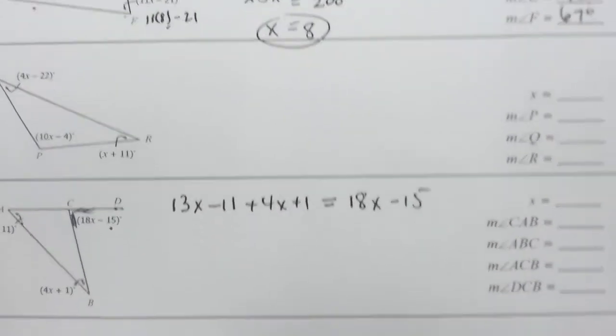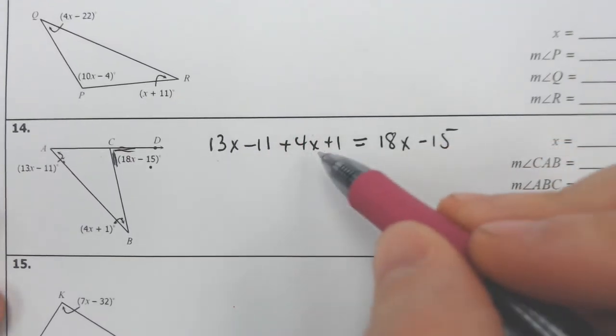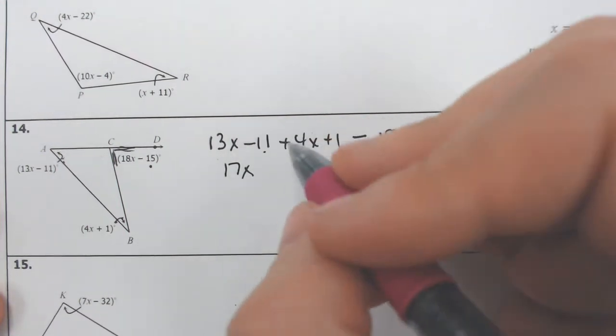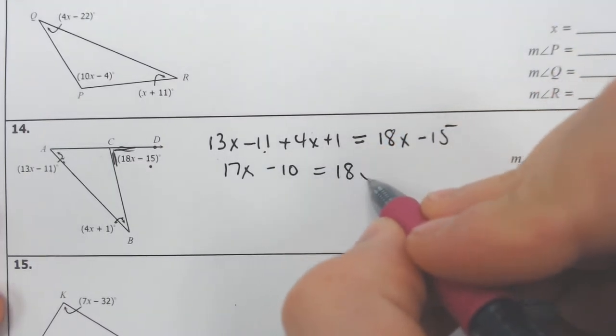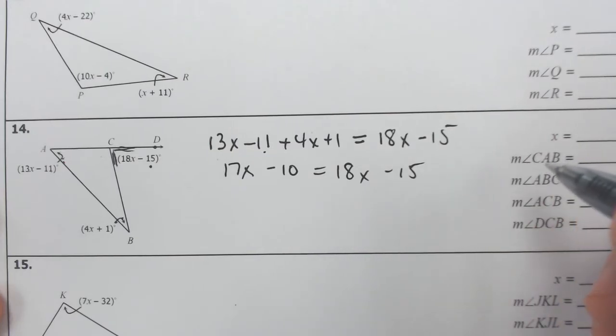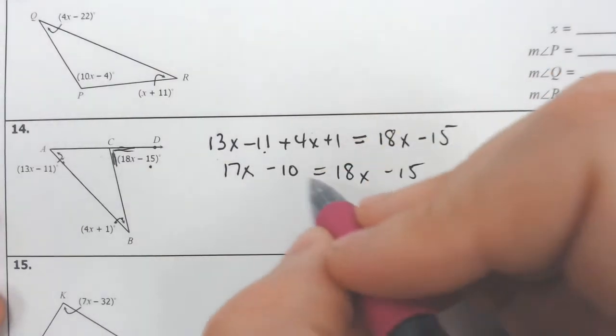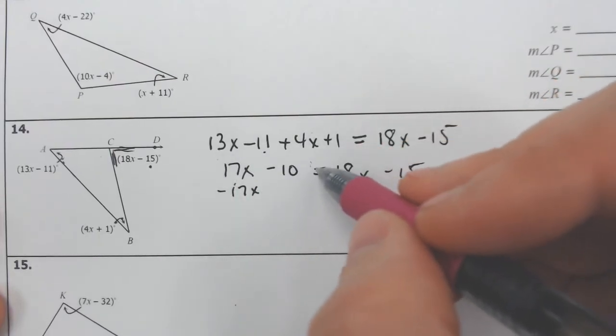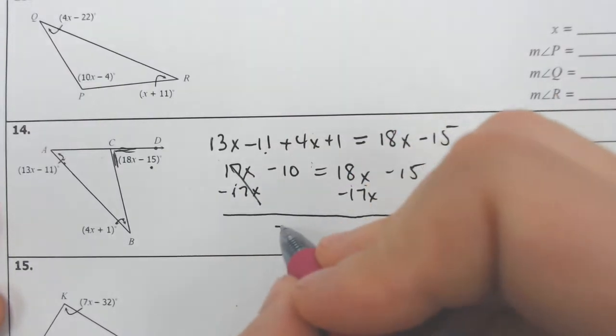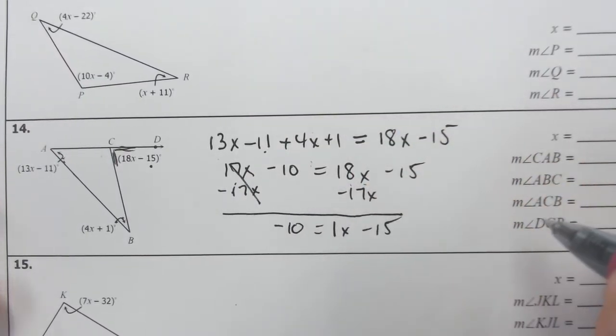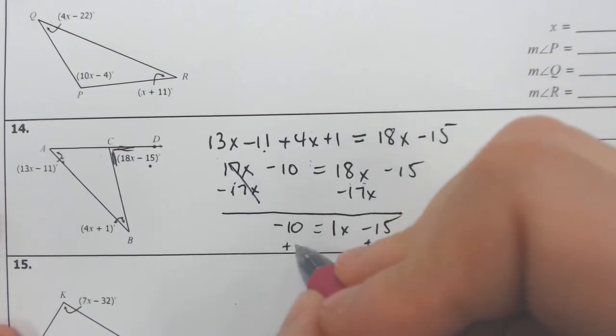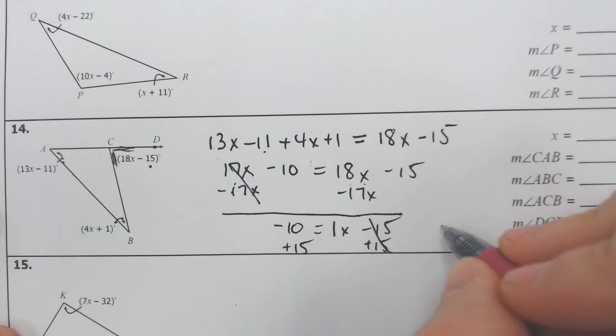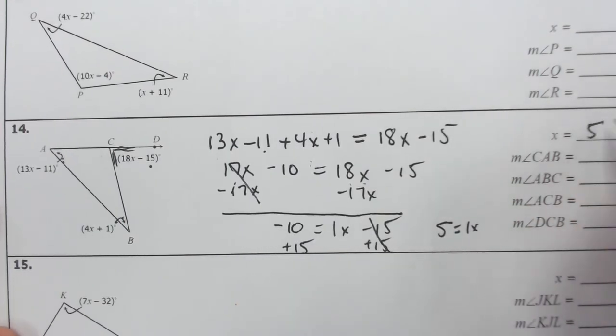Now we have to combine like terms and solve our equation. So we're going to combine 13x and 4x together. They make 17x. Negative 11 and 1 together would make minus 10 equals 18x minus 15. From here, my personal opinion would say it's easier to subtract the smaller number. So I am going to subtract 17x. I get negative 10 equals 1x minus 15. And then I have to add 15 to get what x is because that would get my x by itself. So negative 10 plus 15 is equal to 5. So if 1x is equal to 5, x is equal to 5.